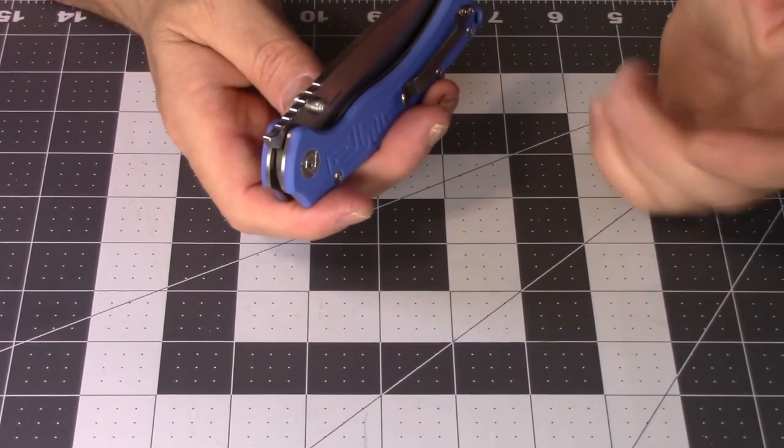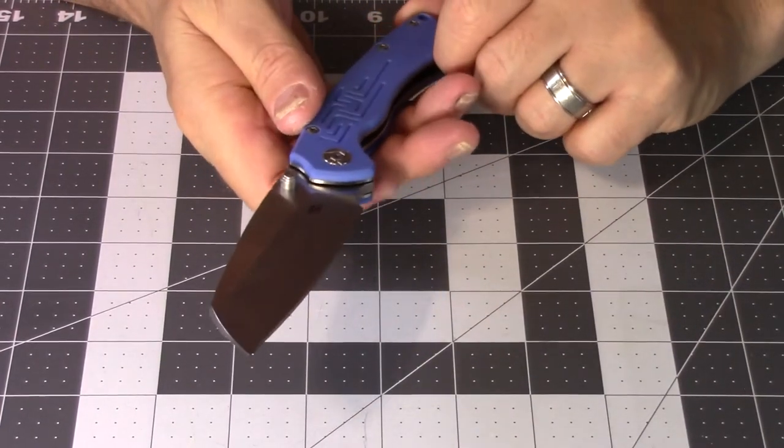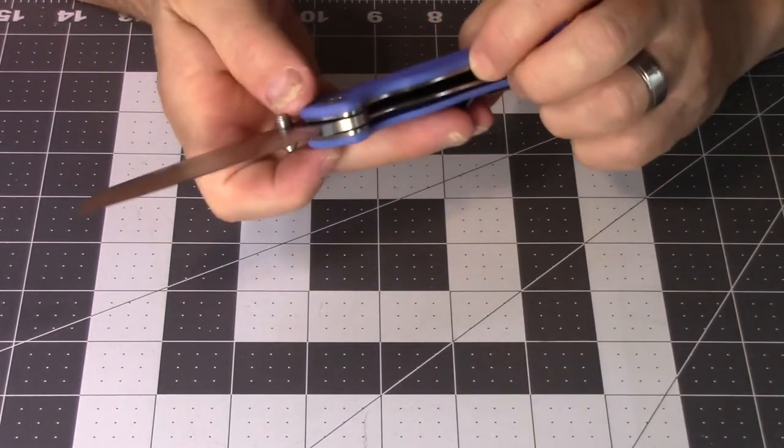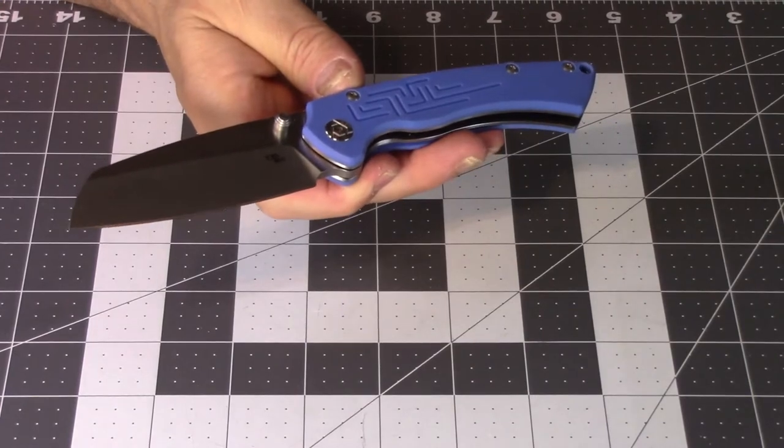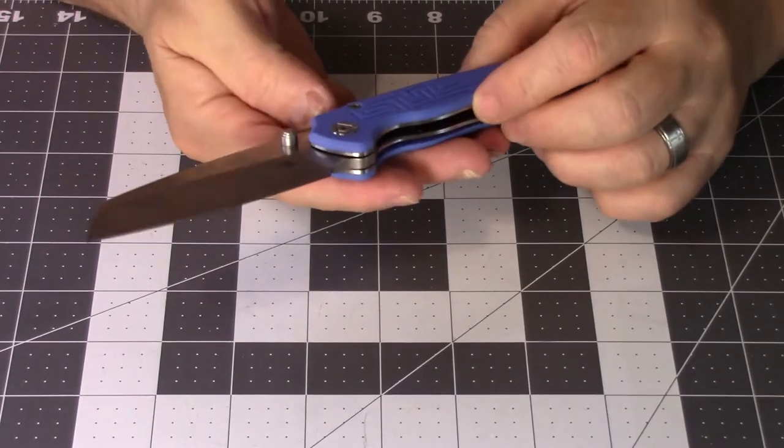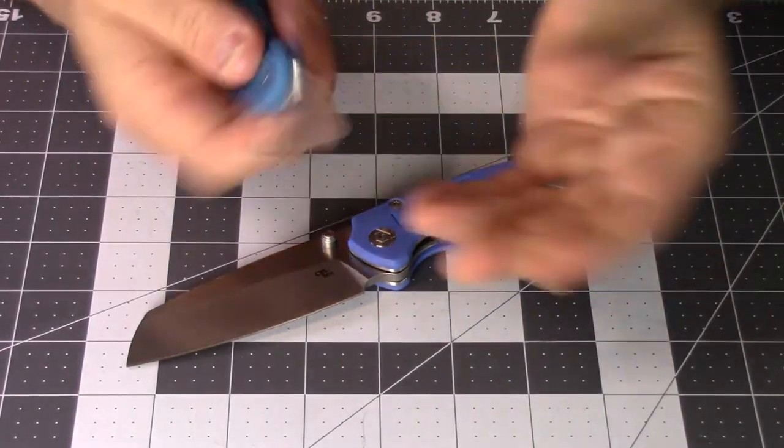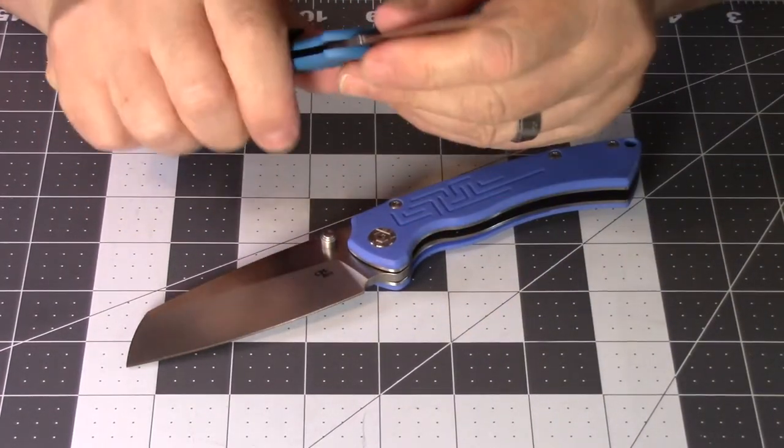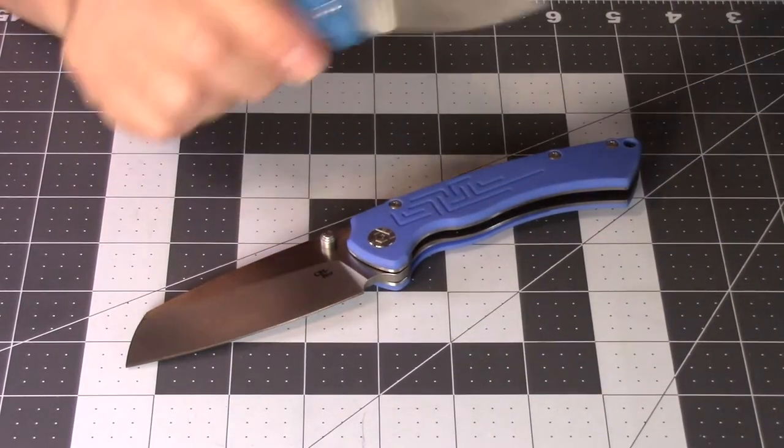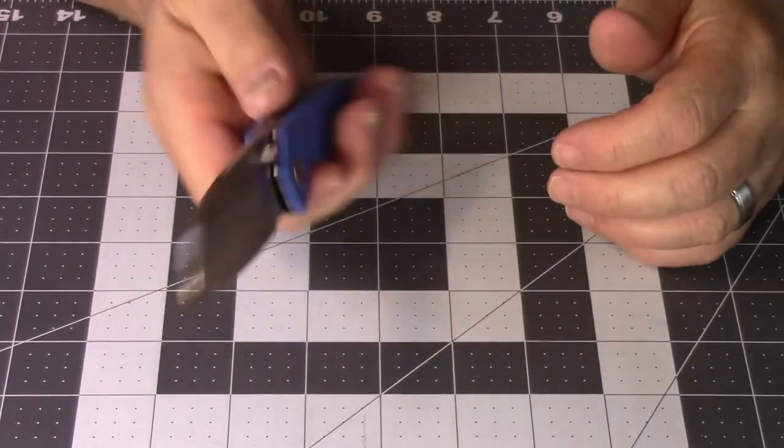It appears CH probably copies some designs but they do not try to pass them off as that, so they're not counterfeit, they're just copied. Well, how many knives are all that original anymore? I mean with all the designs and everything, pretty much everybody is copying somebody something. So I don't hold that against a company as long as they're not trying to pass it off as a real thing.